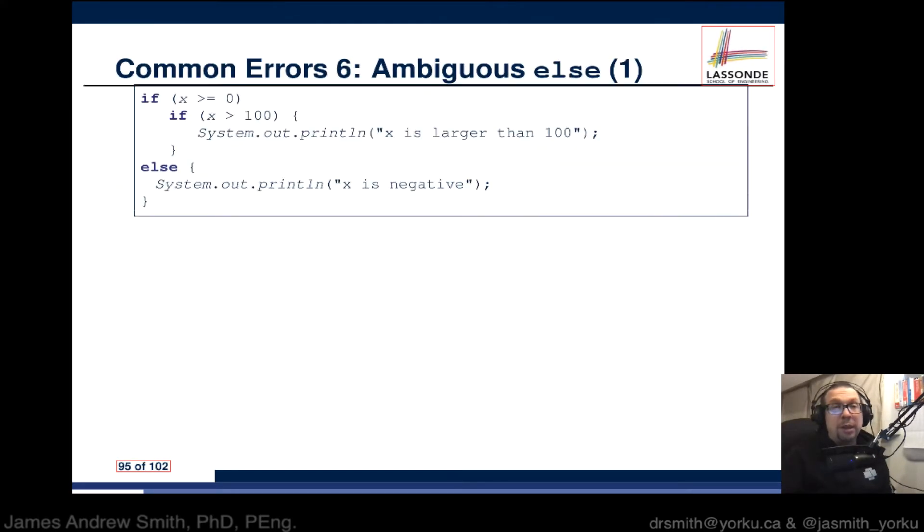Next up, ambiguous else's. You look at this particular block and what we've got is a nested if. You've got a high-level if that's your first if, and then inside of it, if x is greater than or equal to zero, you go to the inside and ask if x is greater than 100.